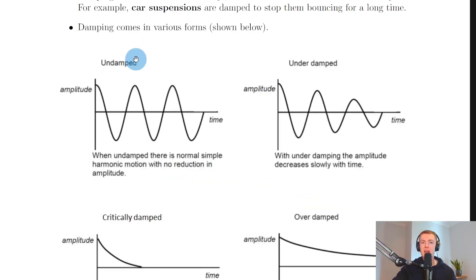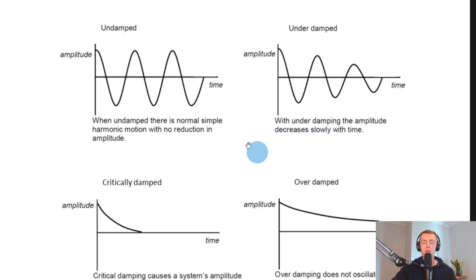Going back to the notes now, we said that damping comes in various forms, and we're going to look at four different cases. So the first one is one we've already looked at, which is the undamped system. So you'll see that when undamped, there is normal simple harmonic motion with no reduction in amplitude. So you get the amplitude being unaffected over time, and it's just a continuous wave pattern.